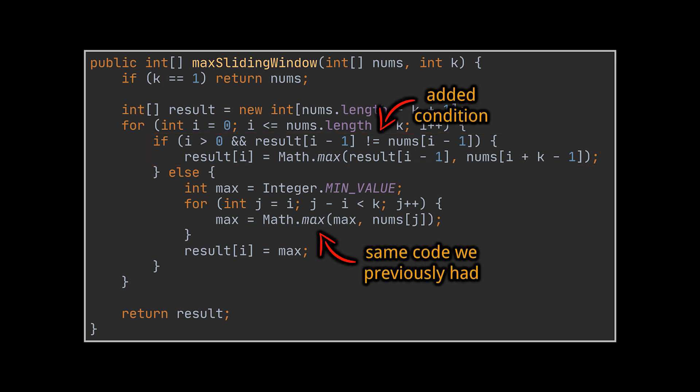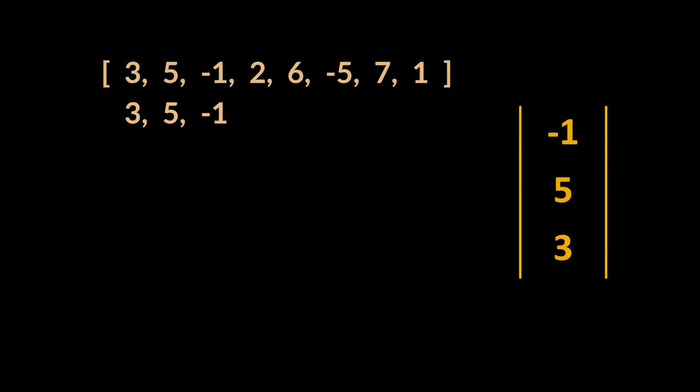If the previous maximum isn't the element removed by sliding, then we retrieve the maximum between the element added by sliding and the previous maximum. If not, we resort to the previous logic and loop over the elements of the window. Realizing that with each iteration you are adding one element and removing another is what will help us further optimize this solution.